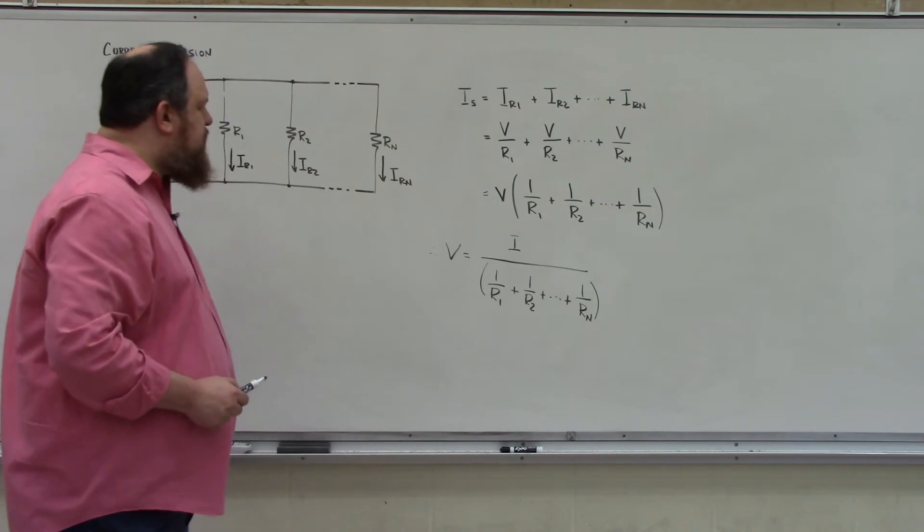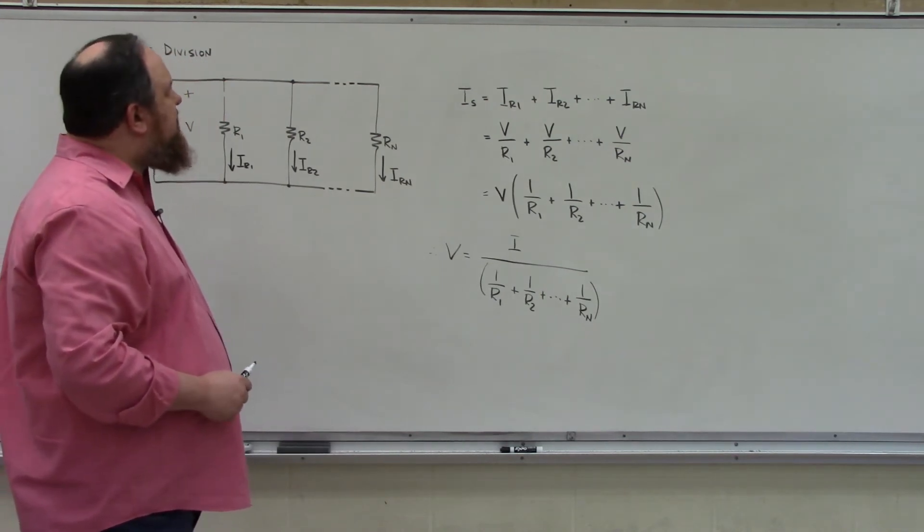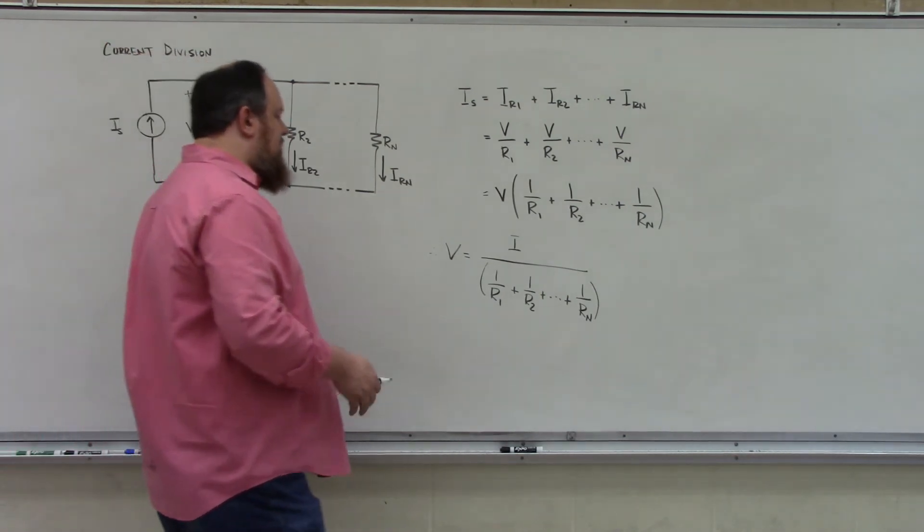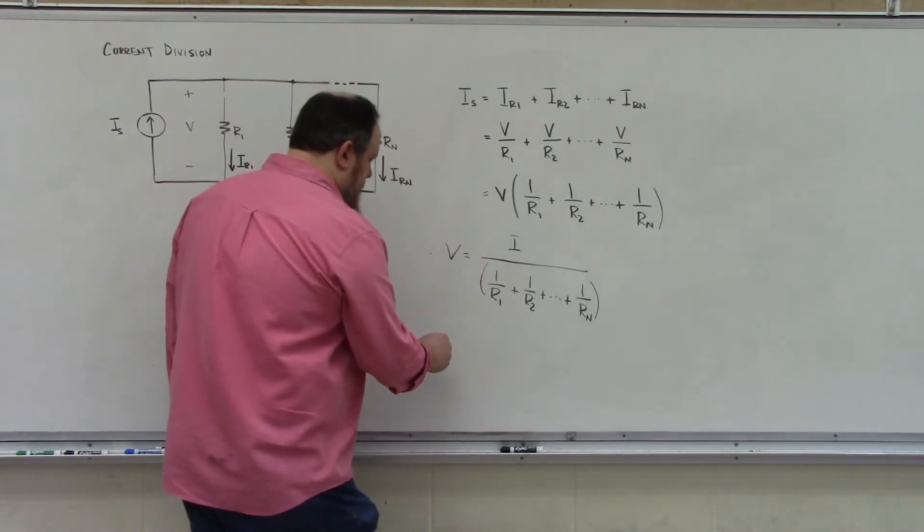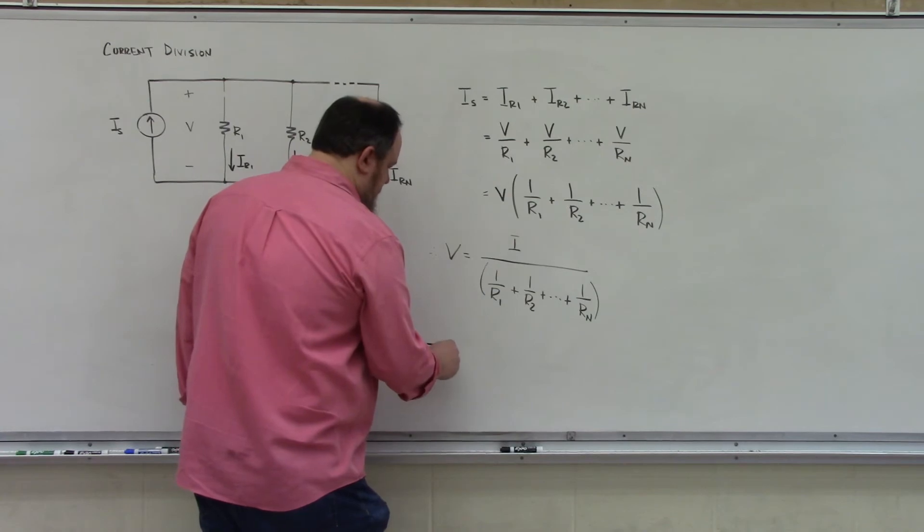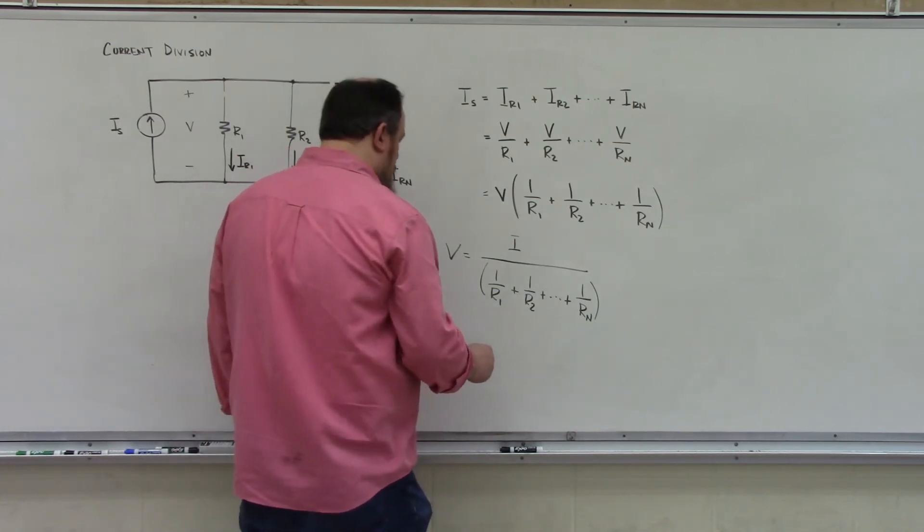And then, I can use this to solve for any individual resistor current without ever actually solving for the quantity V. So for instance, I could say that the current flowing through resistor R1, IR1,